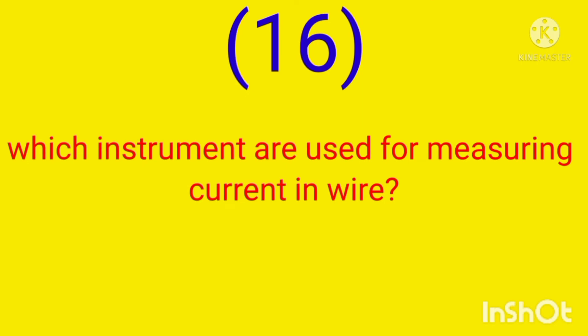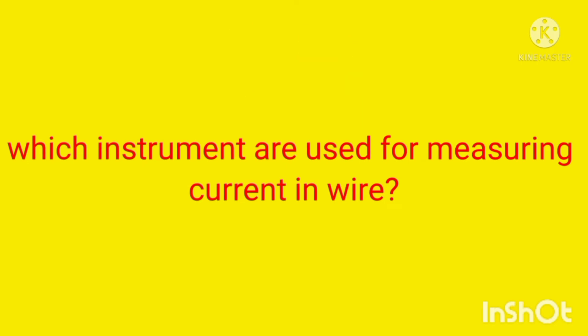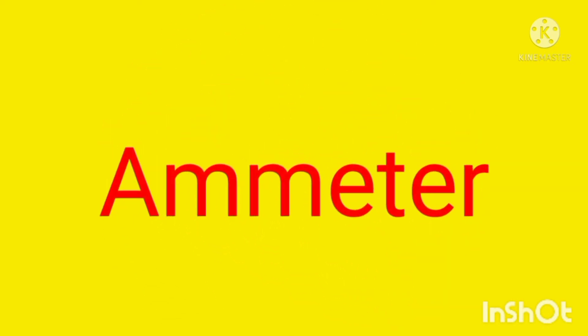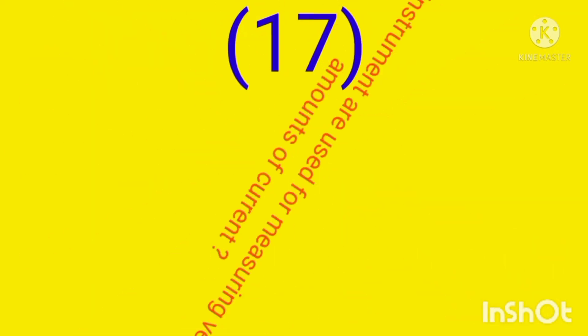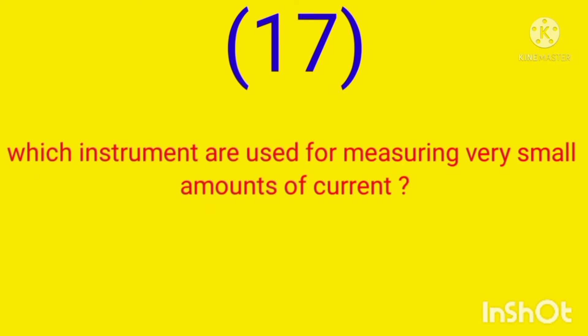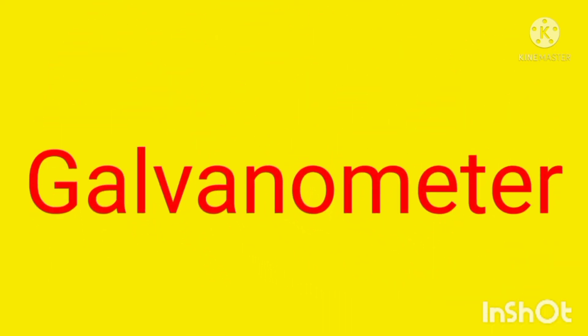Which instrument is used for measuring current in a wire? Ammeter. Which instrument is used for measuring a very small amount of current? Galvanometer.